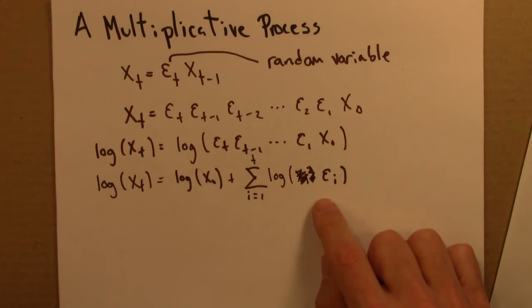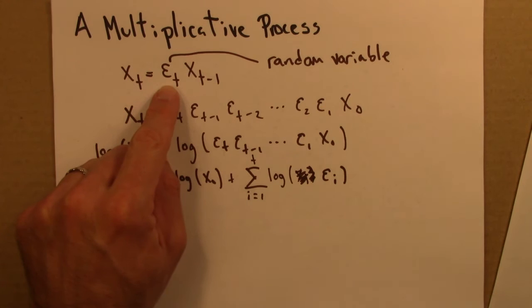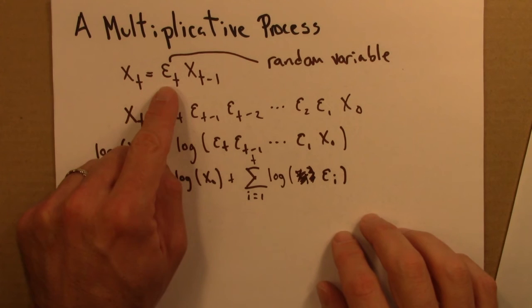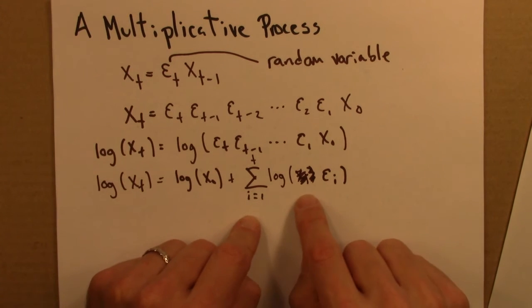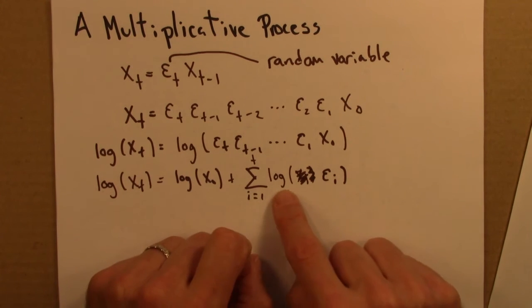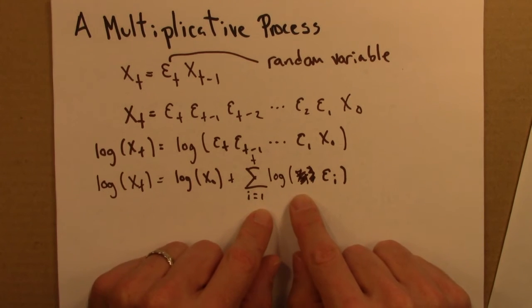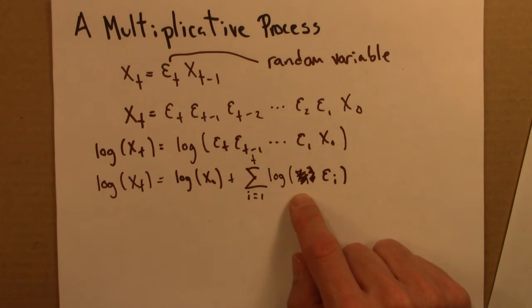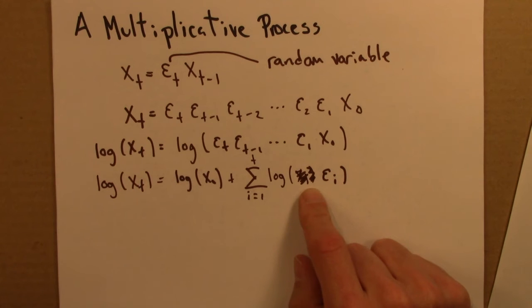Okay, so now let's think about this term. Epsilon is a random variable. That means that the log of epsilon is also a random variable. And then look at what we have here. We have a sum of random variables. So by the central limit theorem, this term is distributed according to a Gaussian. It's a normal distribution. The central limit theorem says that when you have a bunch of random variables added together, that sum is distributed according to a normal distribution.